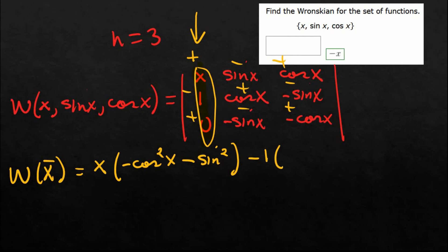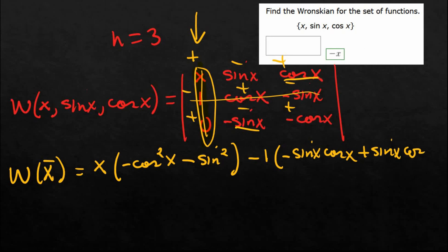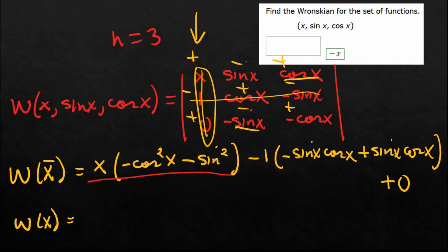So this becomes: x times the minor — that gives cosine x times negative cosine x, which is negative cosine squared x, minus sine squared x. Then minus one times its minor, giving sine x minus cosine x contribution. And this is minus a minus, so that becomes plus sine x times cosine x. We don't need the last term because it's zero. These two sine-cosine cross terms are opposites, so they cancel — that's zero. So we get x times negative cosine squared x minus sine squared x, which is negative x times one — that's just negative x.